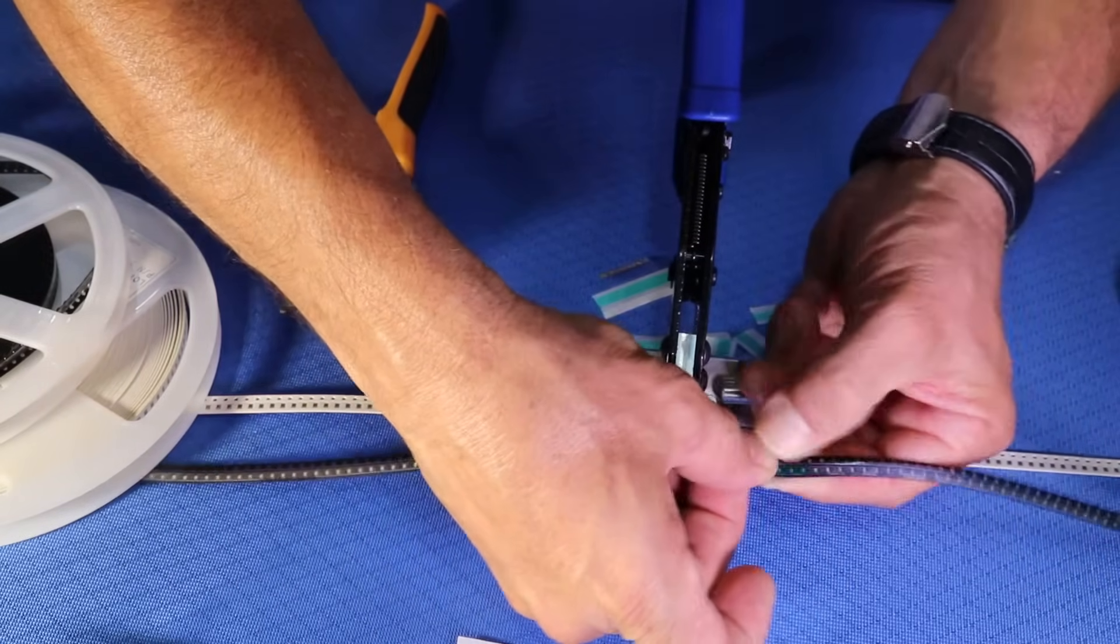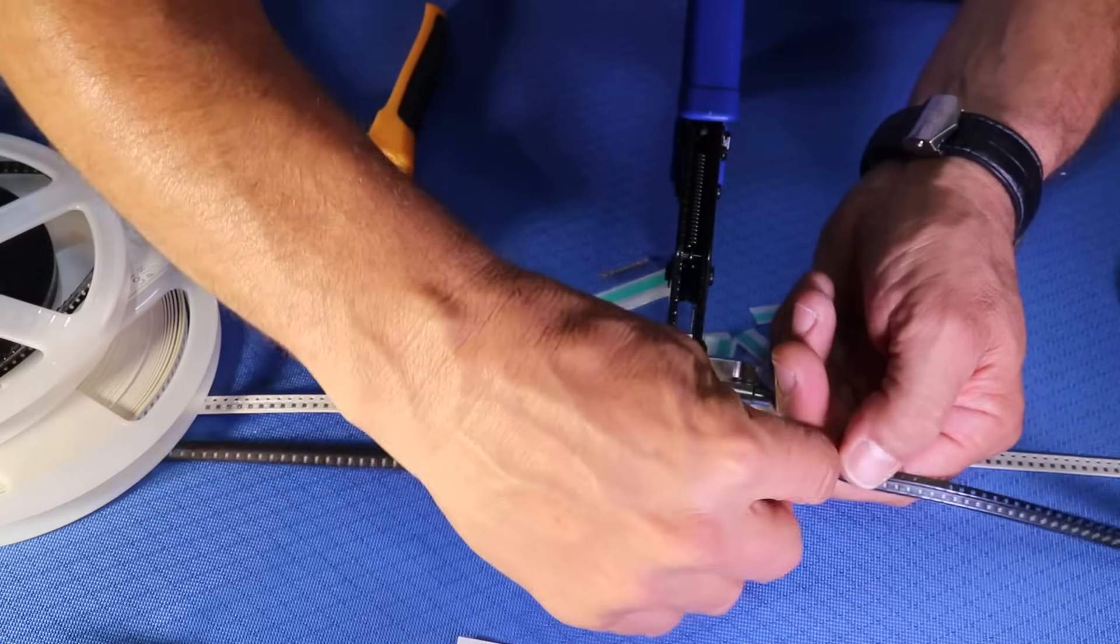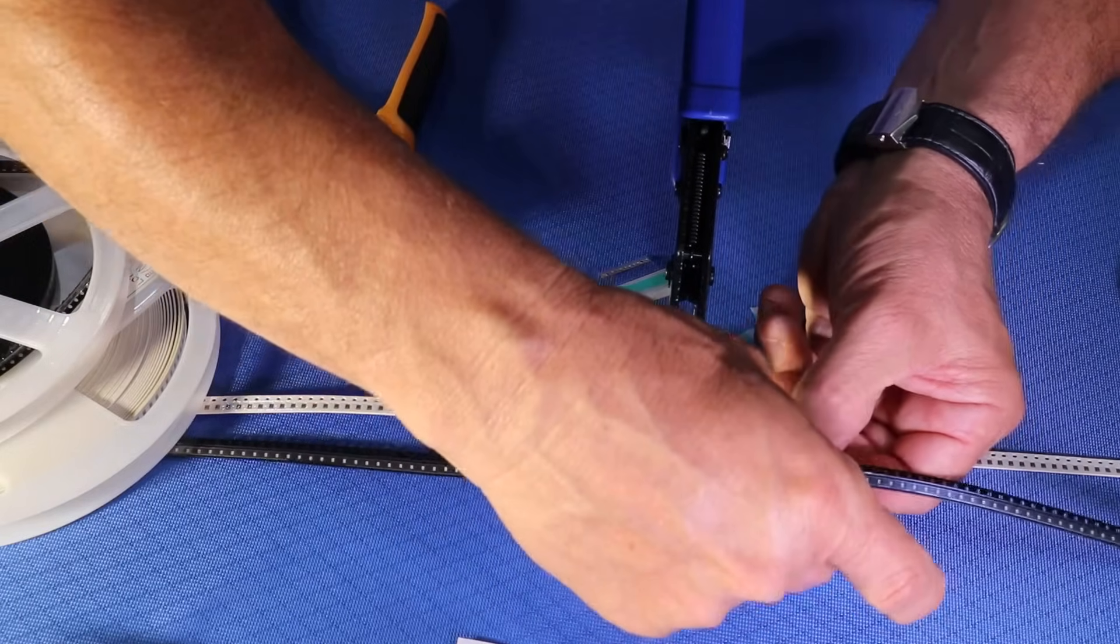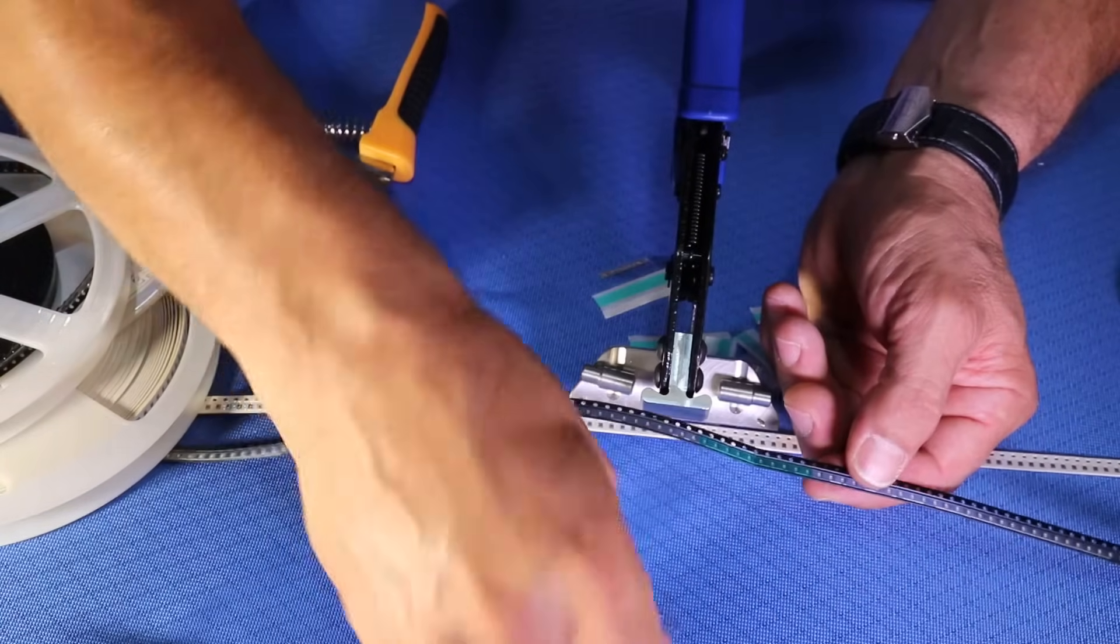Then we'll press firmly on both sides. Once we press firmly on both sides, we'll remove the clear carrier and discard it.